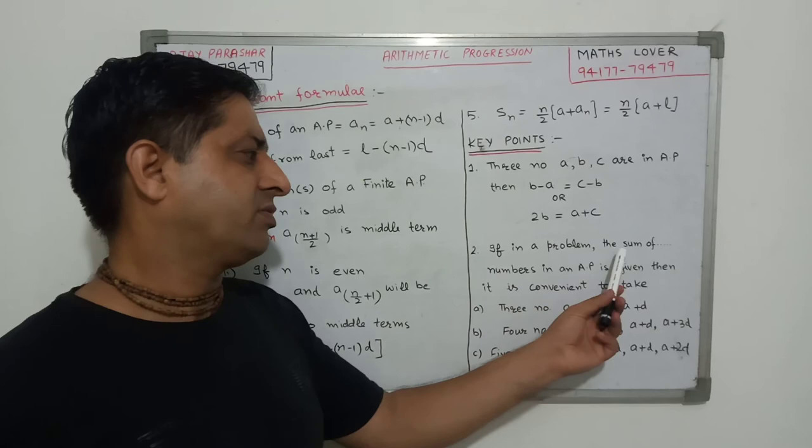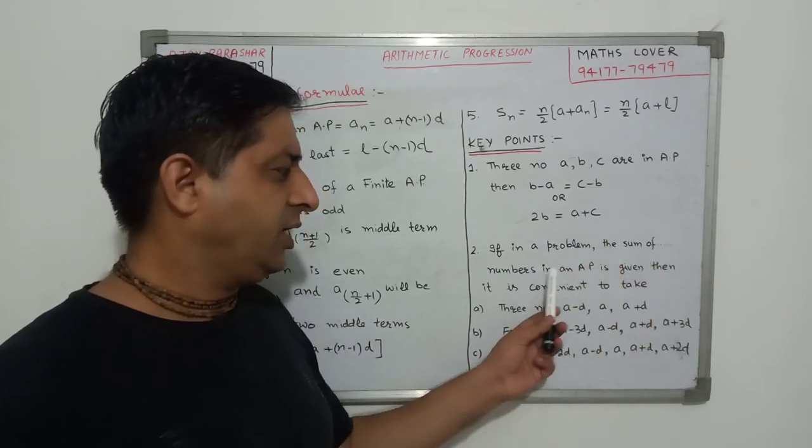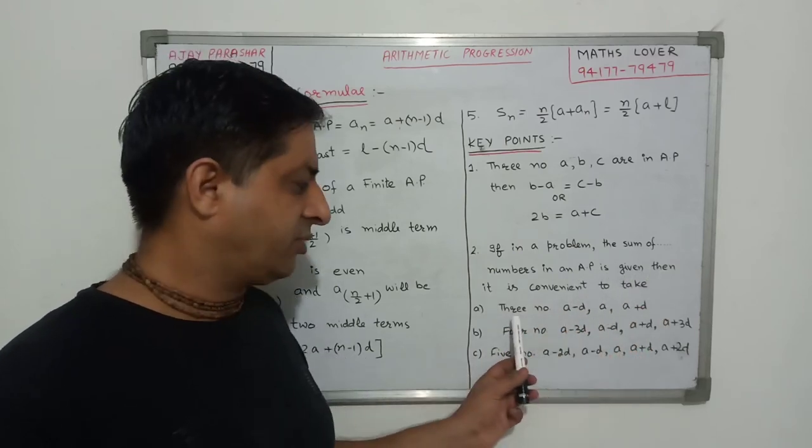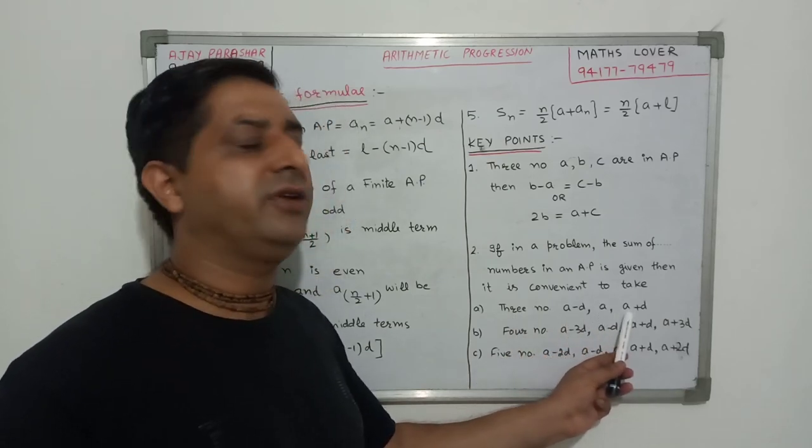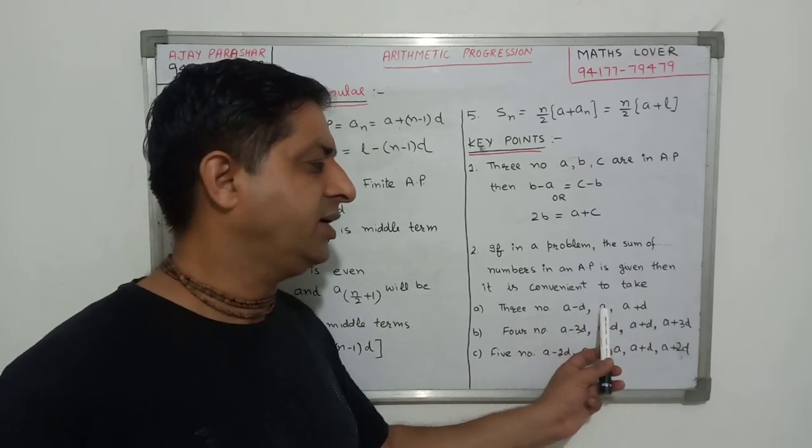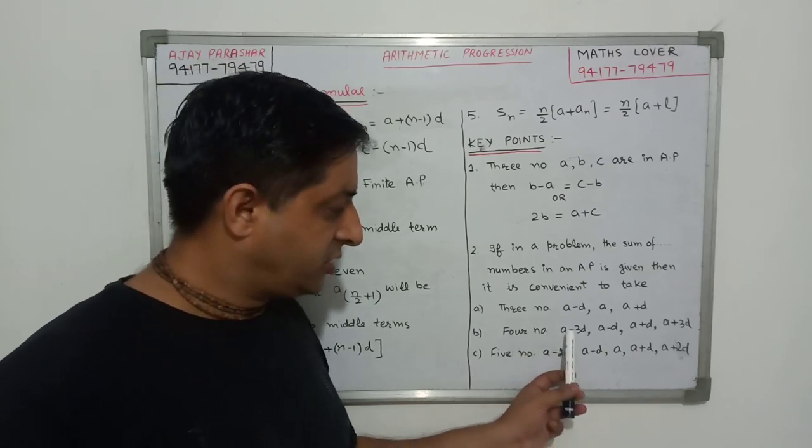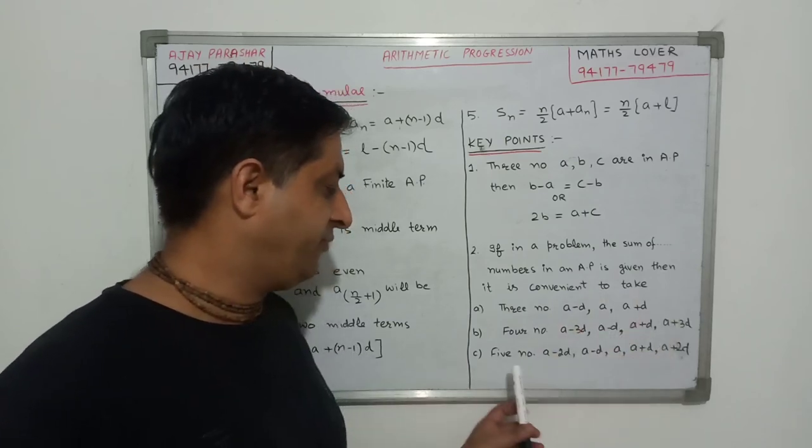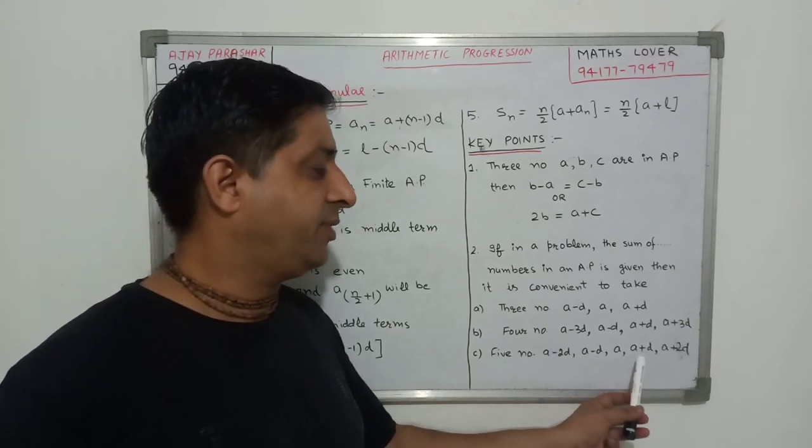If in a problem the sum of, for example, say three numbers, four numbers or five numbers in an AP is given, then it is convenient to take the numbers. For three numbers, we will take the numbers A minus D, A, A plus D. And if we are given the sum of four numbers, then we will take these numbers: A minus 3D, A minus D, A plus D, A plus 3D. And if we have given five numbers, we will take A minus 2D, A minus D, A, A plus D, A plus 2D.